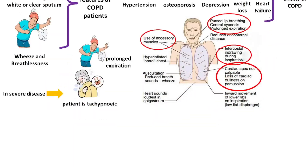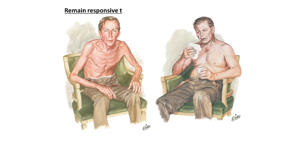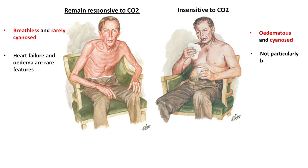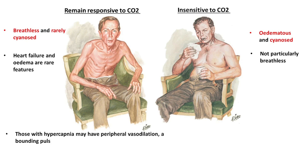Patients who remain responsive to CO2 are usually breathless and rarely cyanosed. Heart failure and edema are rare features, except as terminal events. In contrast, patients who become insensitive to CO2 are often edematous and cyanosed, but not particularly breathless. Those with hypercapnia may have peripheral vasodilation, a bounding pulse, and a coarse flapping tremor of the outstretched hands.